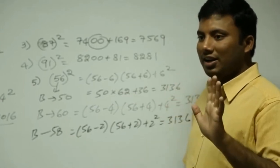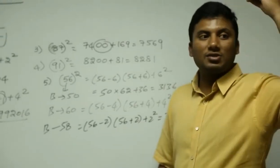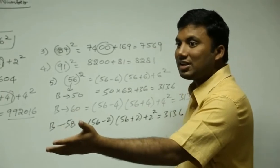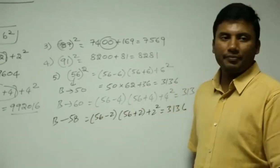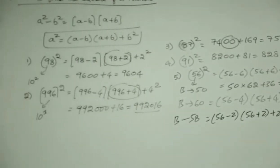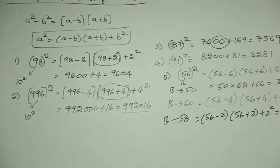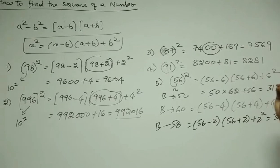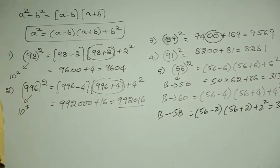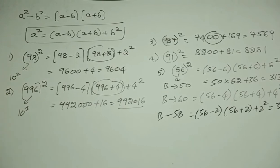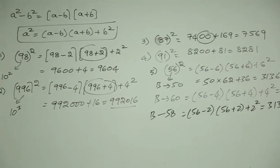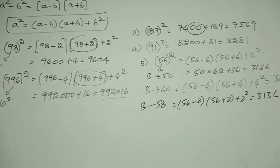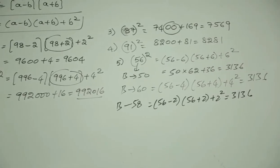When you are attempting a competitive examination, what is the idea? Solve as many correct answers as possible in less time. While you are listening to this demonstration, help me out — I am attempting 30 questions, help me reach 70 questions in 30 minutes. That is the intention. To find the square of a number, the second logic used is a² - b² = (a - b)(a + b), and another form: a² = (a - b)(a + b) + b².